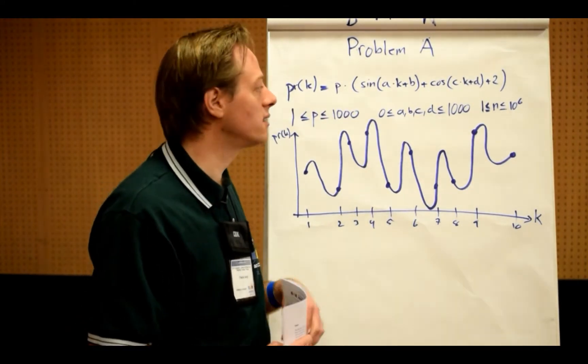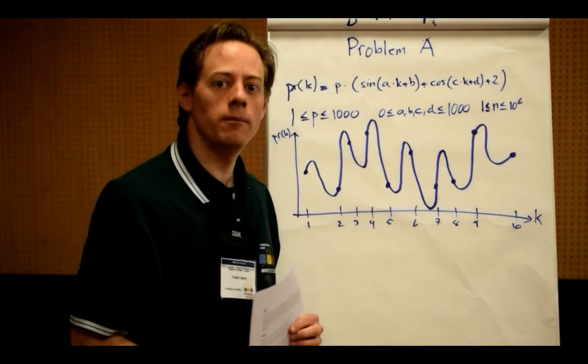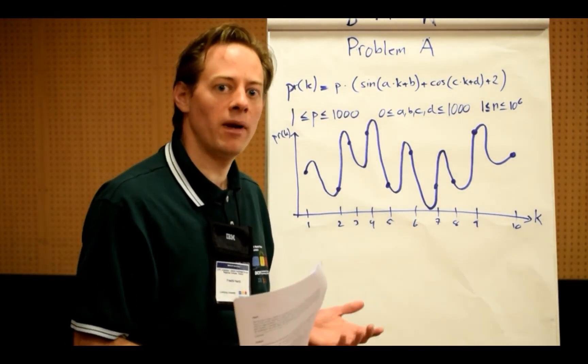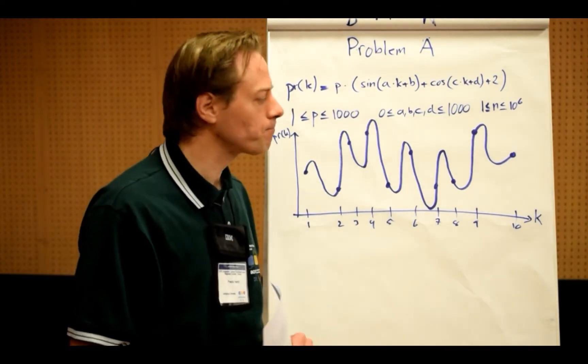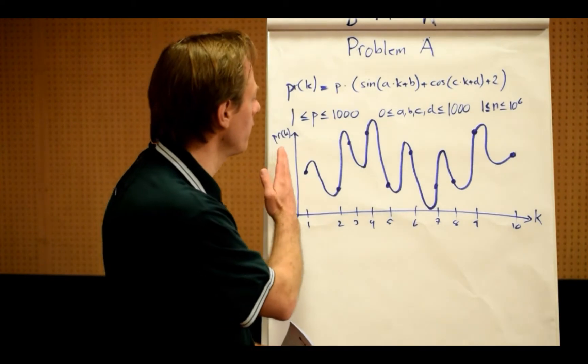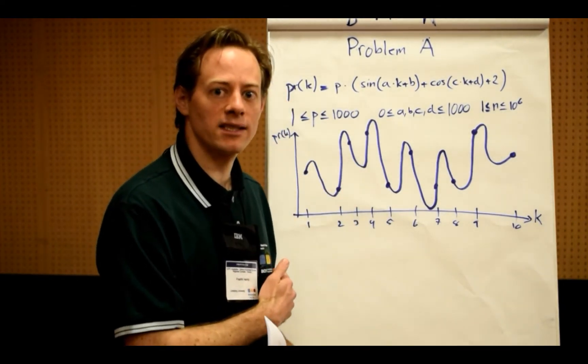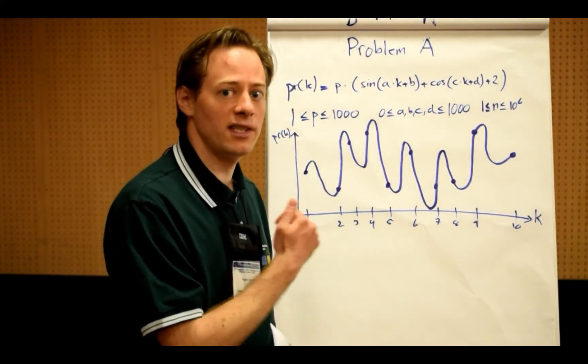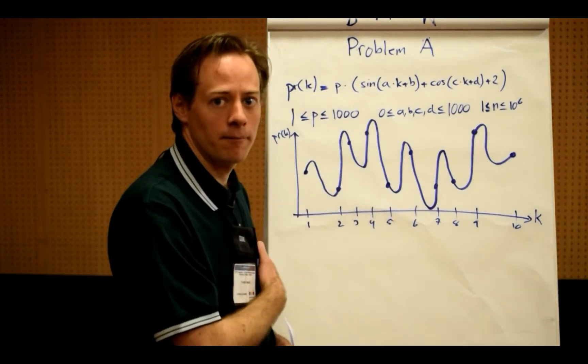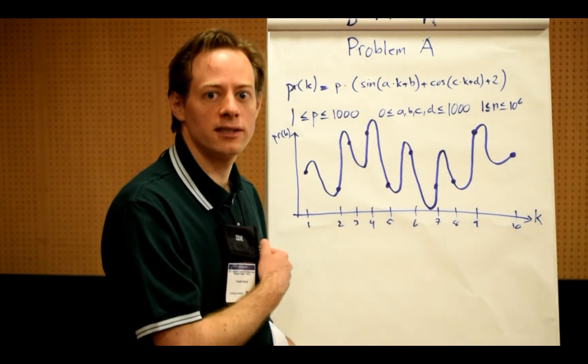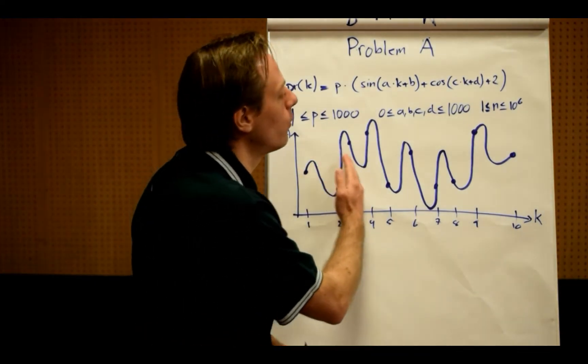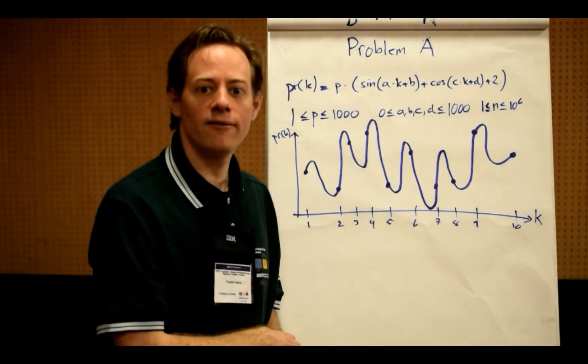To do this, since there can be up to one million such points, you basically need a linear or maybe log linear solution. The simplest way of doing this is going from the left keeping track of what is the maximum number that you have seen and comparing that maximum number with the current number. If that difference is the biggest difference you have seen so far, save it. When you get to the end, you will have the correct answer.